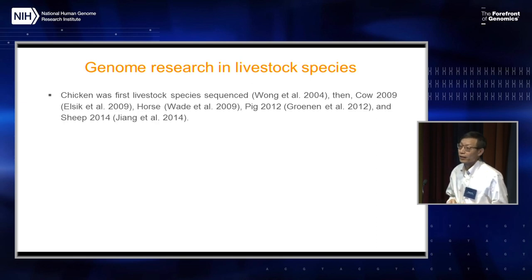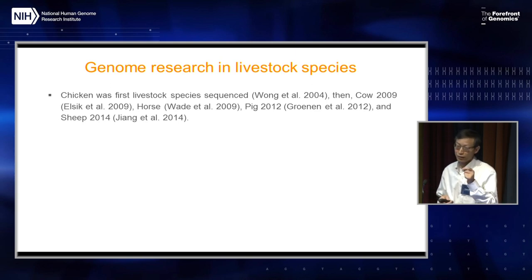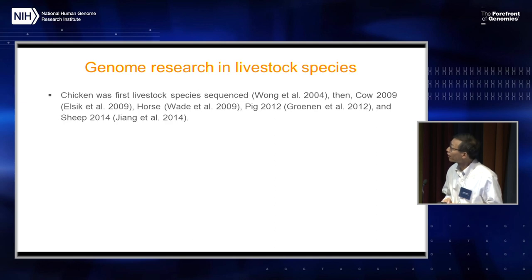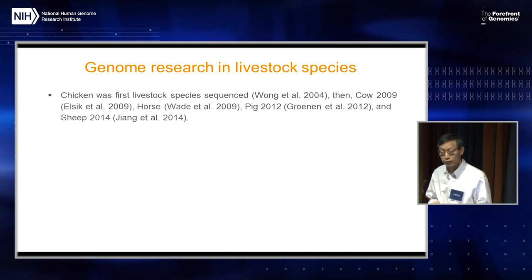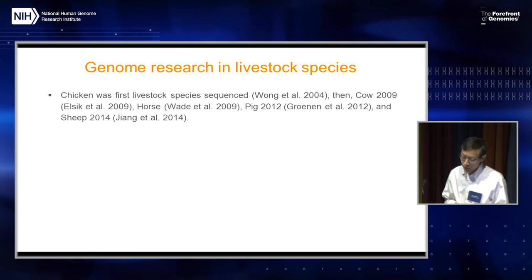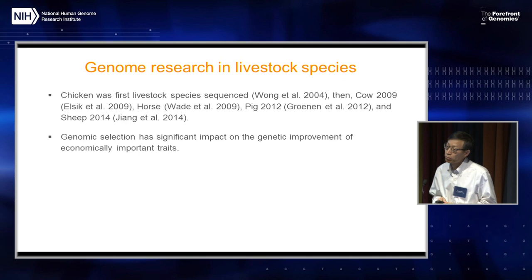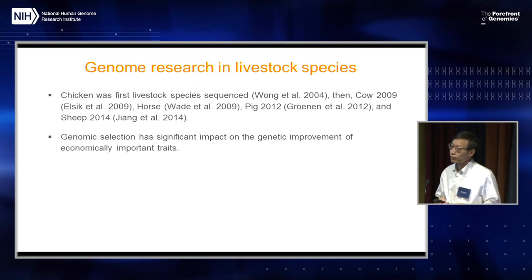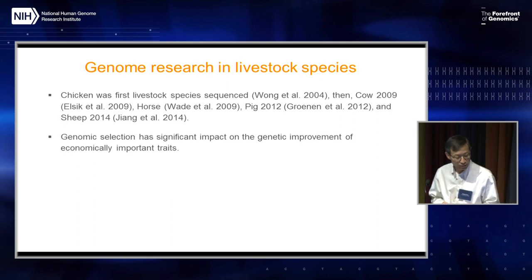Chicken was actually the first agricultural species sequenced, in 2004, because chicken is really important if you look at the evolution of the phylogenomic tree — it's a really important evolutionary point. Then later on, cow and horse in 2009, pig in 2012, and sheep in 2014. Since those agricultural species were sequenced, there's been significant improvement in economically important traits using that information, including genomic selection for complex traits such as milk production, growth rate, feed efficiency, and disease resistance.